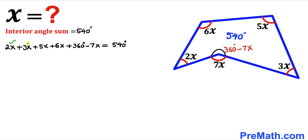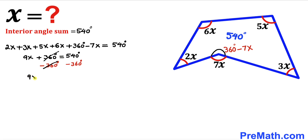Now let's combine like terms. We get 9x plus 360 degrees equals 540 degrees. Subtracting 360 degrees from both sides, the 360s cancel, leaving us with 9x equals 180 degrees. Dividing both sides by 9 to isolate x, our x value turns out to be equal to 20 degrees.